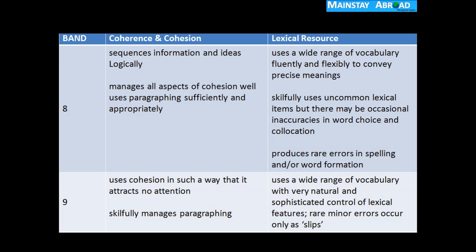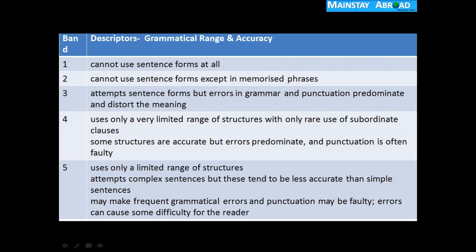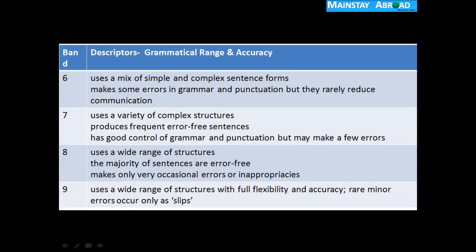Next is Grammatical Range and Accuracy — how well you handle grammar. These descriptors help you understand how examiners will evaluate your paper. For band 9: uses a wide range of structures with full flexibility and accuracy; rare minor errors occur only as slips. You should understand most of the facts of band descriptors across Task Response, Coherence and Cohesion, Lexical Resource, and Grammatical Range and Accuracy.